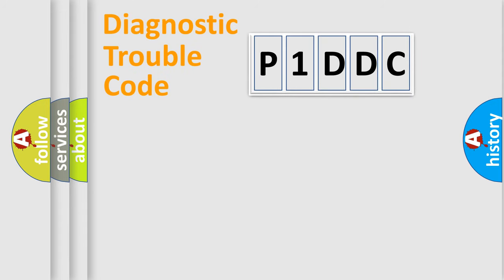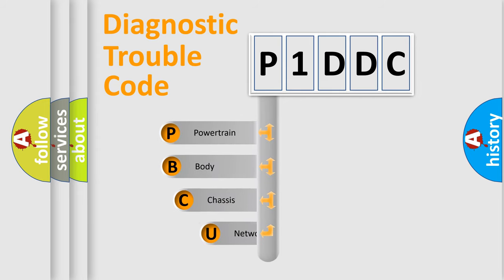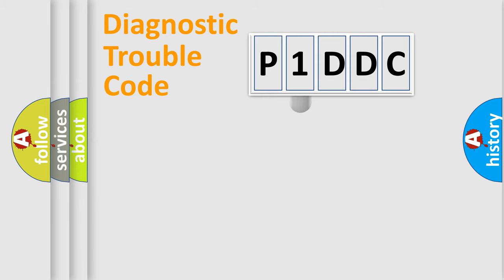First, let's look at the history of diagnostic fault code composition according to the OBD2 protocol, which is unified for all automakers since 2000. We divide the electric system of automobile into four basic units: Powertrain, Body, Chassis, and Network. This distribution is defined in the first character code.